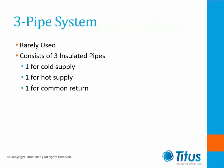Three-pipe systems have separate chilled and hot water supplies with a common return. These systems are rarely used because they consume more energy due to the excessive mixing of the chilled and hot water in the common return. You might run across some of these systems in renovations, but they are not allowed under current energy codes for new designs.